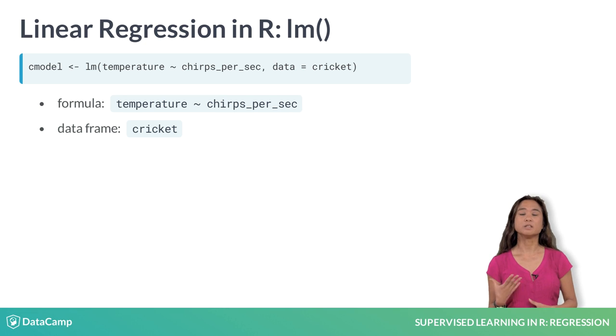In our cricket example, linear regression assumes that temperature is directly proportional to cricket chirp rate. In R, you fit a linear regression model using the lm function. This function takes as arguments a formula that describes the model you want to fit and the data. Here, the data is in the data frame cricket, with an outcome column temperature and an input column chirps per second.